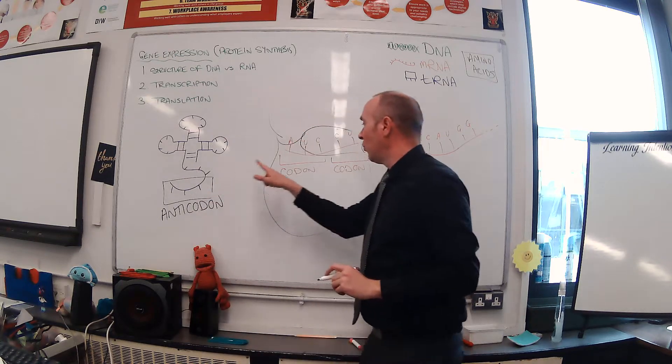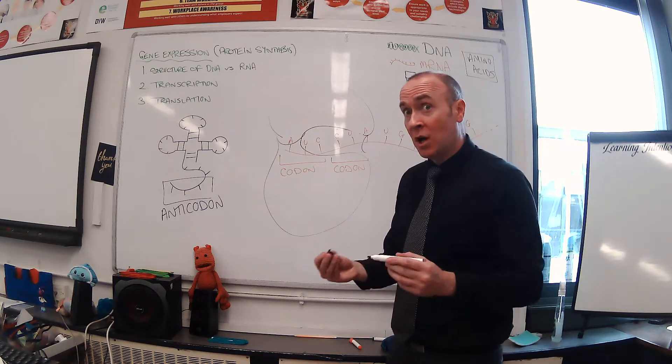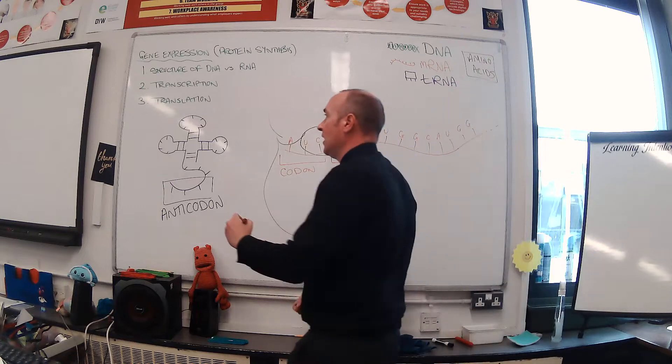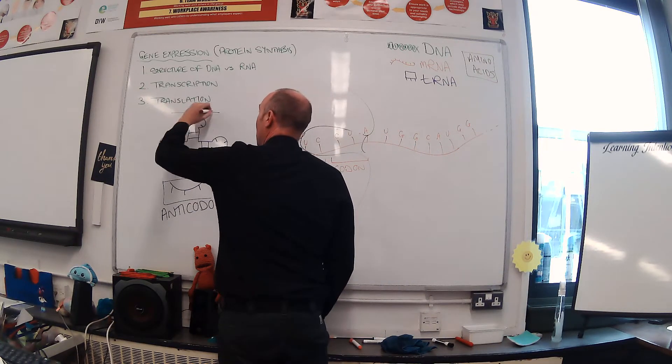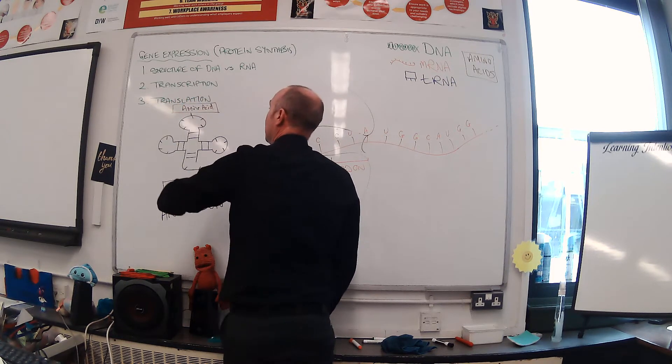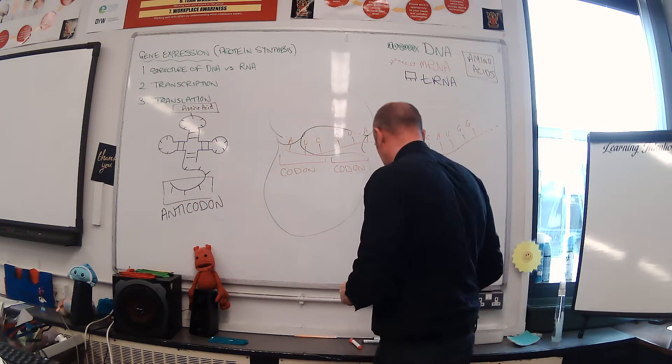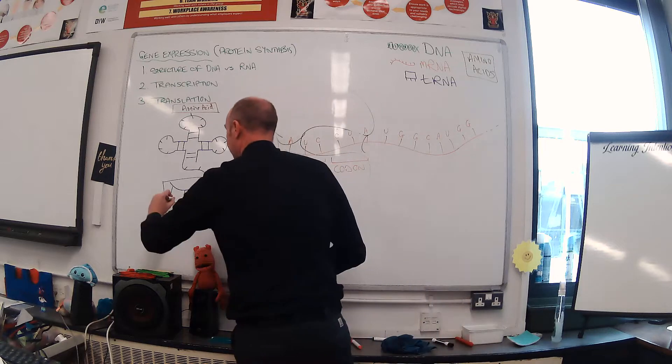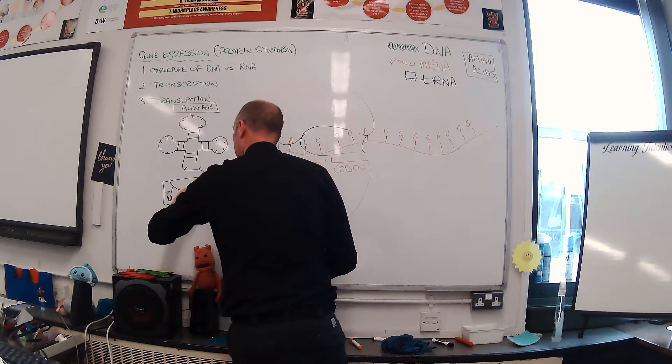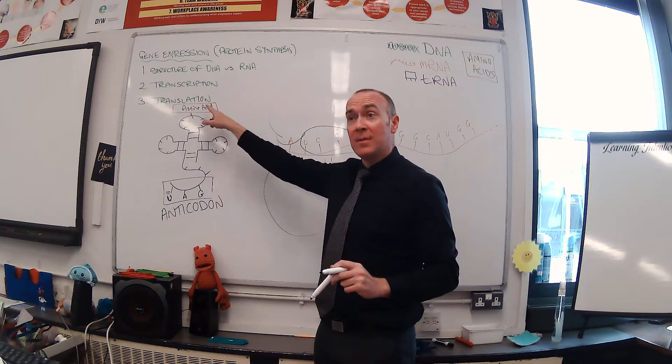Those three bases are called an anticodon, and they will match with a codon on the mRNA strand somewhere. The other major thing to explain about tRNA is that every molecule of tRNA is attached to a specific amino acid.